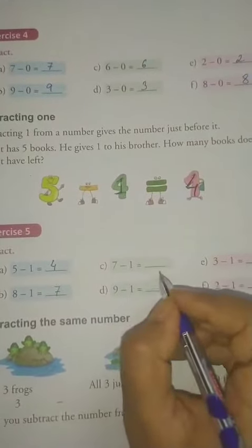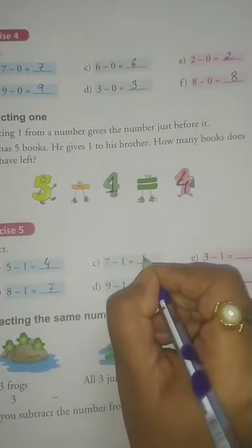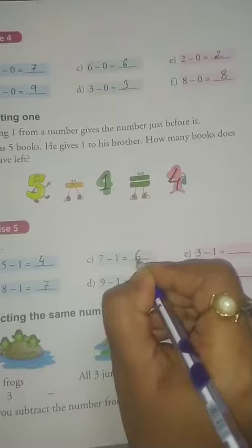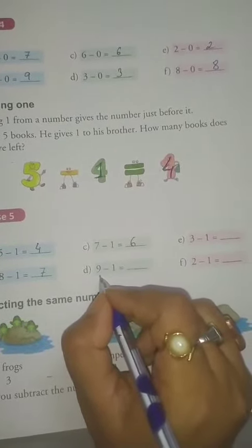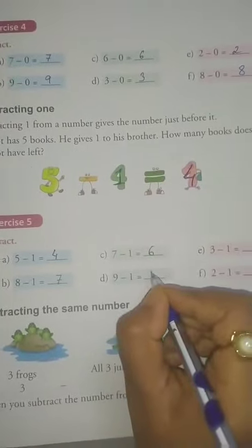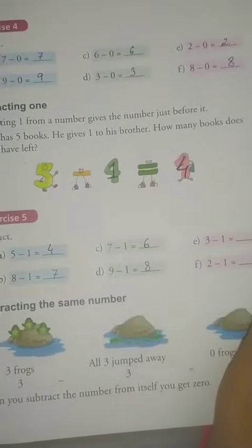7 minus 1. What comes before 7? 6. 7 minus 1 is equal to 6. 9 minus 1. What comes before 9? 8. So 9 minus 1 is equal to 8.